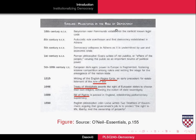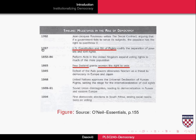Here are some milestones in the rise of democracy. Some important ones: 1215, the signing of the Magna Carta; 1648, the establishment of the Treaty of Westphalia; the Bill of Rights in England in the late 17th century; the U.S. Constitution and Bill of Rights. And in 1893, New Zealand was the first country to grant women the right to vote. In fact, the last major advanced democracy to grant women the right to vote did so in 1971 — that was Switzerland.